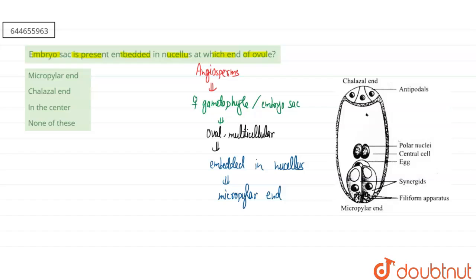There is a presence of the egg apparatus in which basically synergids and egg cell are present, while in chalazal end there are only antipodal cells. That's why it is present near the micropylar end.